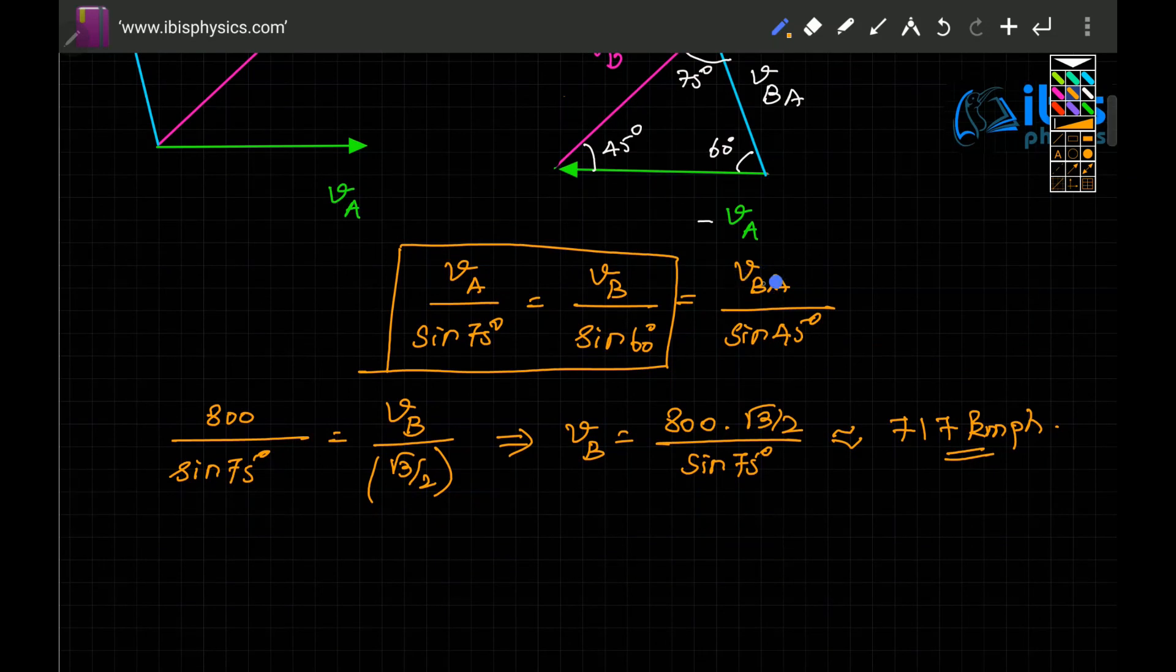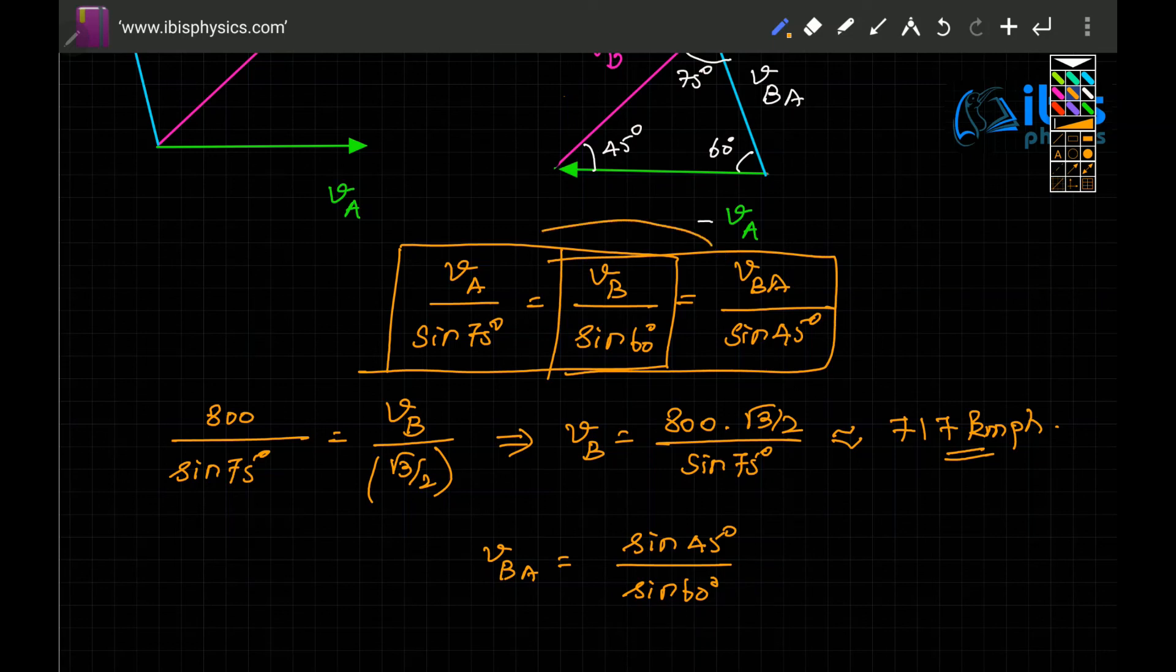So we have found out. If they ask you what is the relative velocity of B with respect to A, it is VBA equal to sine 45 degrees by sine 60 degrees times velocity of B, which is 717 kilometers per hour.